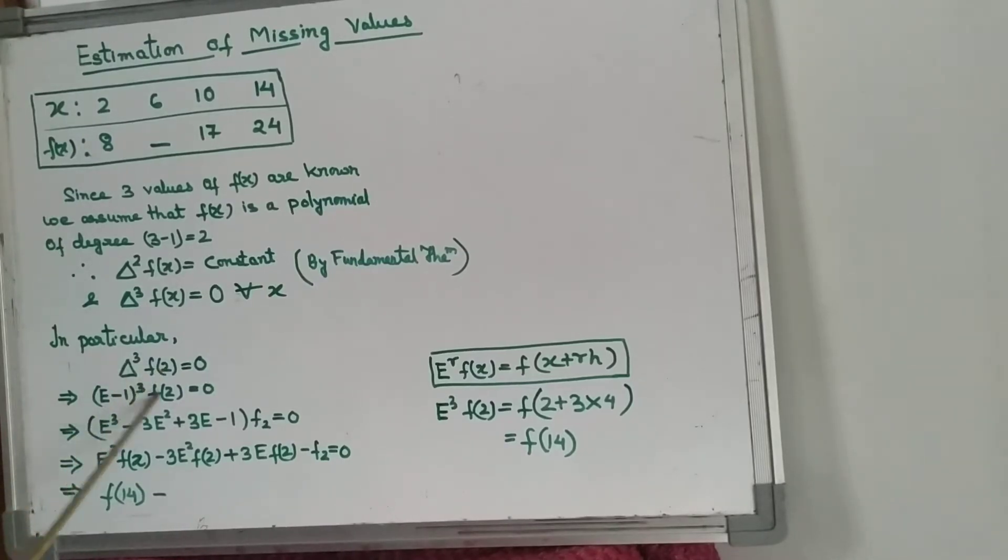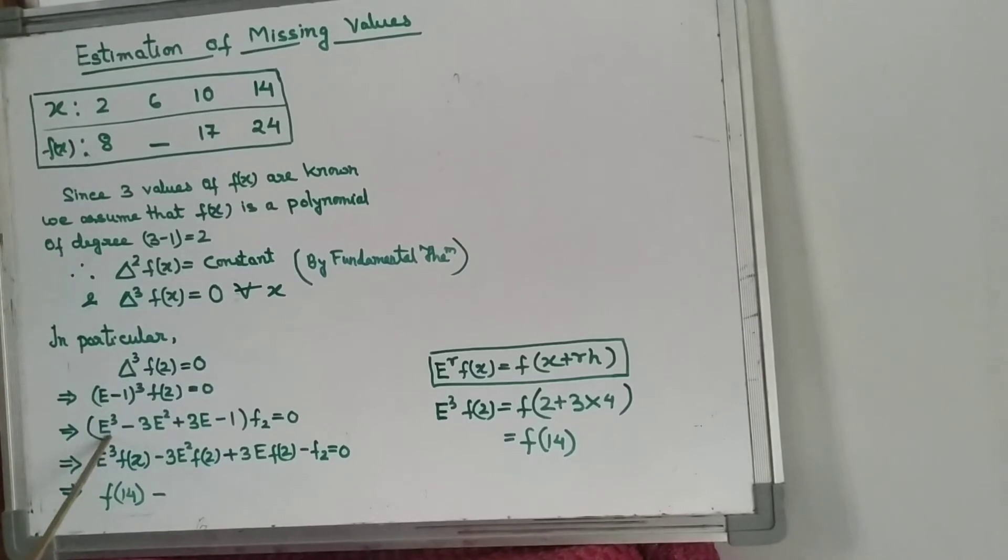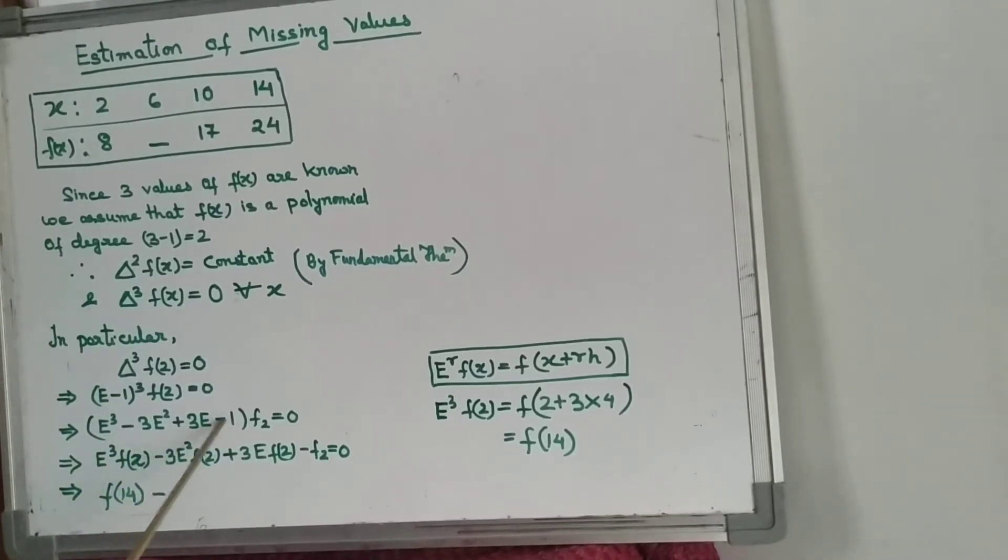Now we can expand it with the help of the Pascal triangle. It is E^3 minus 3E^2 plus 3E minus 1 times f(2), and this is equal to 0.